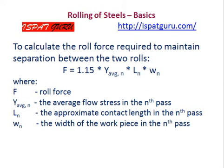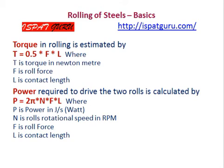To calculate the load force required to maintain separation between the two rollers, the formula is: F = 1.5 × Y_average × l_n × w_n, where Y_average is the average flow stress in the nth pass, l_n is the approximate contact length in the nth pass, and w_n is the width of the workpiece in the nth pass. The torque in rolling is estimated by T = 0.5 × F × l, where T is the torque, F is the roll force, and l is the contact length.